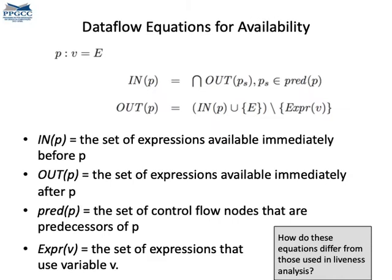Well, here they are. These equations show how to compute the in and outsets. They look a bit like the equations used in liveness analysis, but they are different. The first difference is that in liveness analysis we were using union on successors to join information. Here we are using intersection on predecessors. Also, we are dealing with entire expressions and not with variables.